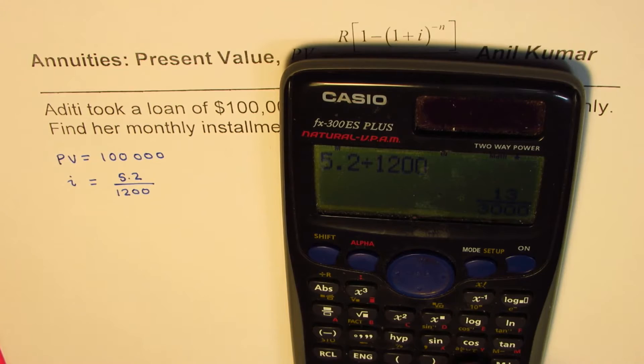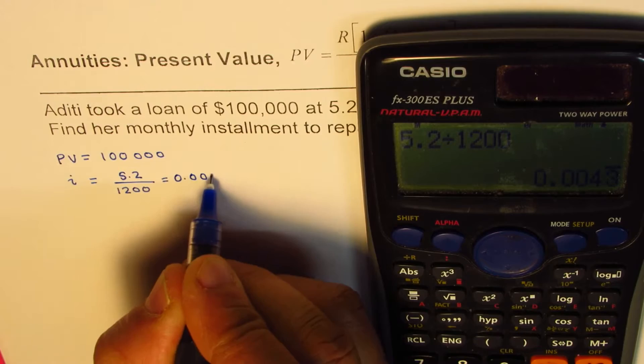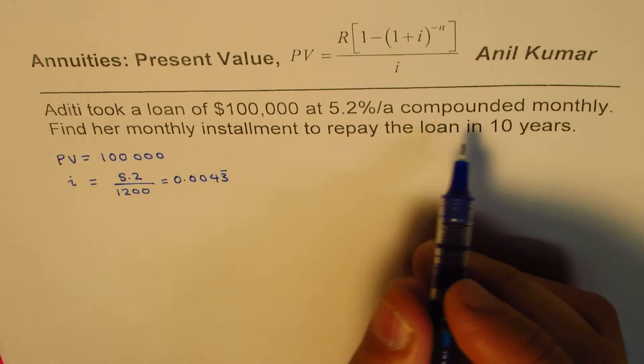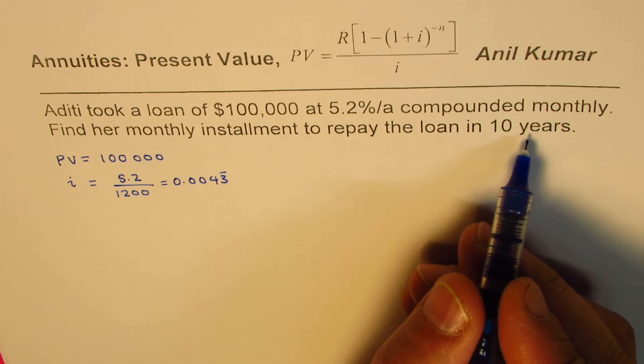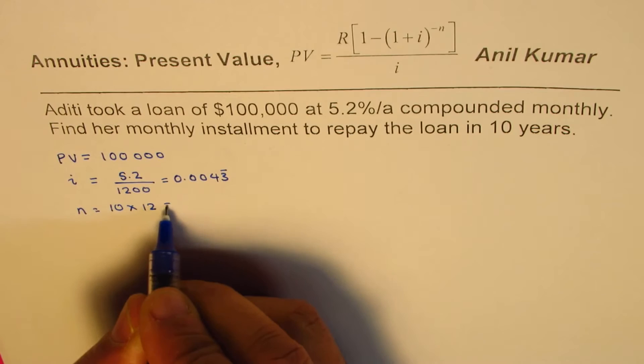Okay, so that's the interest rate. Now we have n as 10 years with monthly payments, so n is going to be 10 times 12 which is 120.